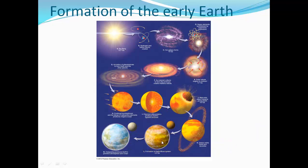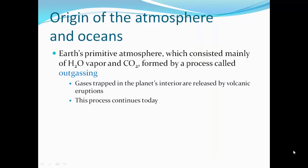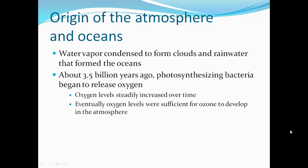Our moon and our atmosphere form. Earth's primitive atmosphere, consisting mainly of H2O water vapor and CO2 carbon dioxide, formed by a process called outgassing. Gases trapped in the planet's interior were released by volcanic eruptions, and this process continues today. Water vapor condenses to form clouds and rainwater that form the oceans. About 3.5 billion years ago, photosynthesizing bacteria began to release oxygen, and oxygen levels steadily increased over time. Eventually, oxygen levels were sufficient for ozone to develop in the atmosphere.